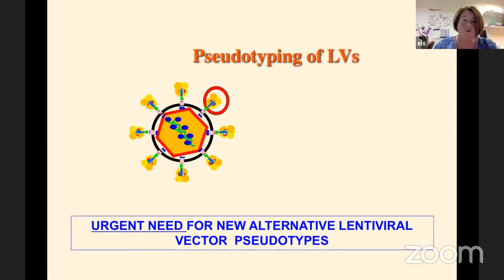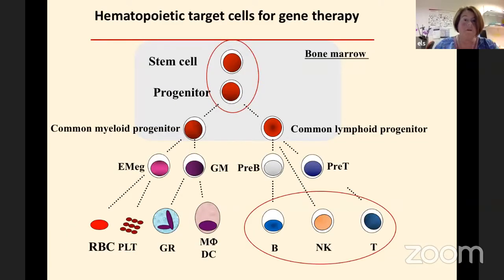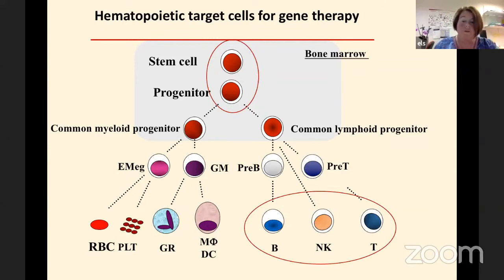The target cells I'm going to talk about today are stem cells and progenitors as gene therapy targets, B cells, NK cells and T cells, and I'm going to give you some examples of the value these new pseudotypes might have for these target cells.